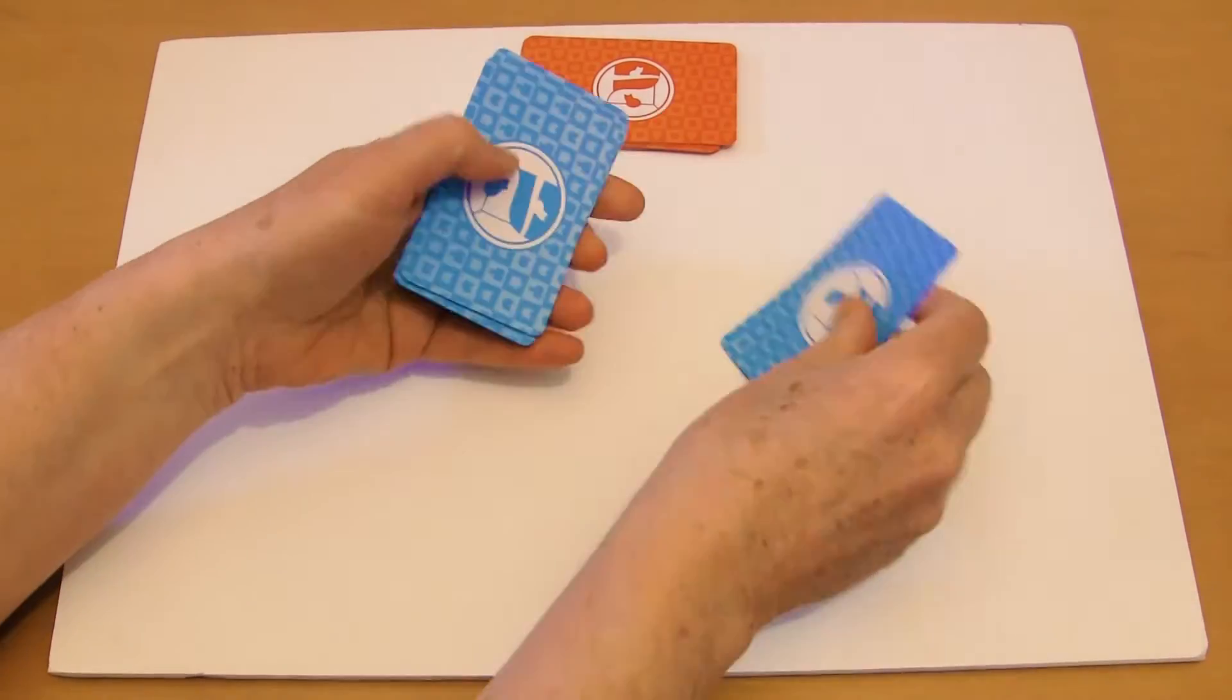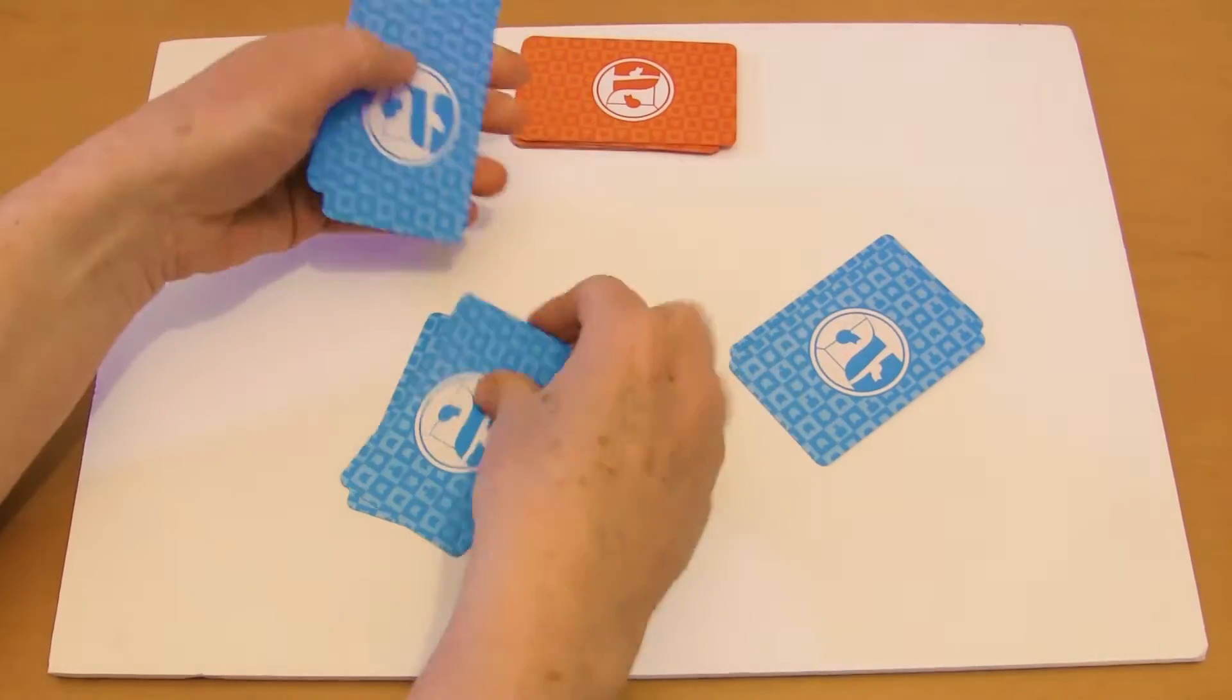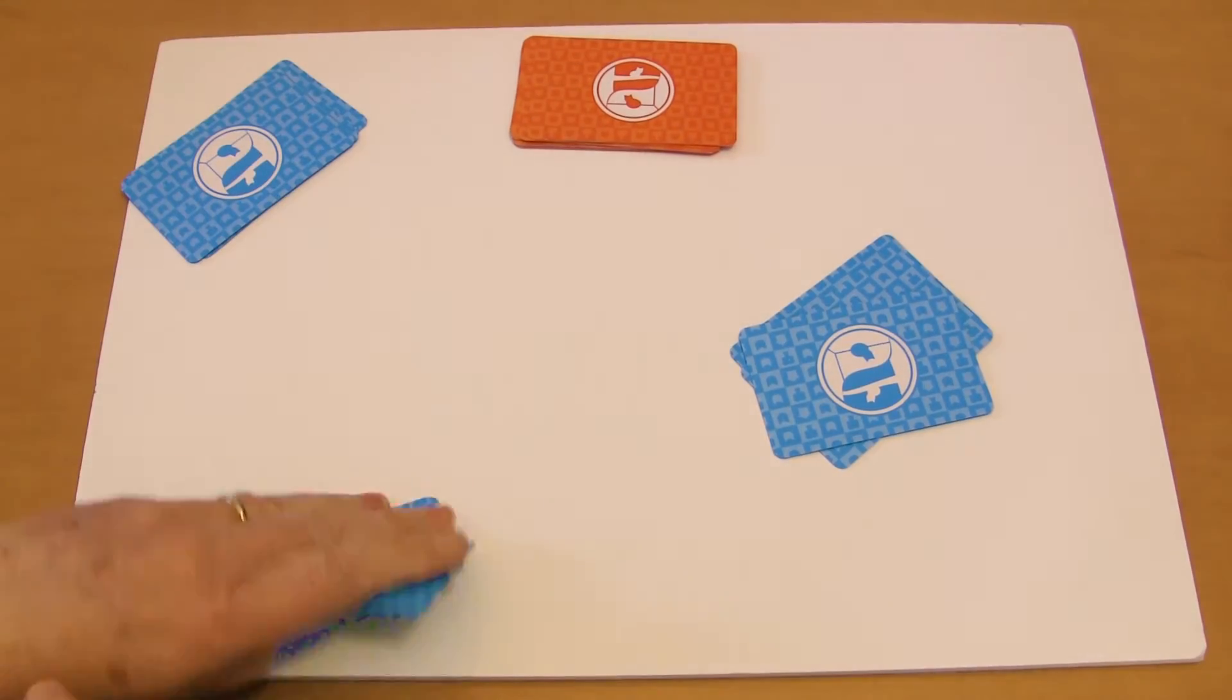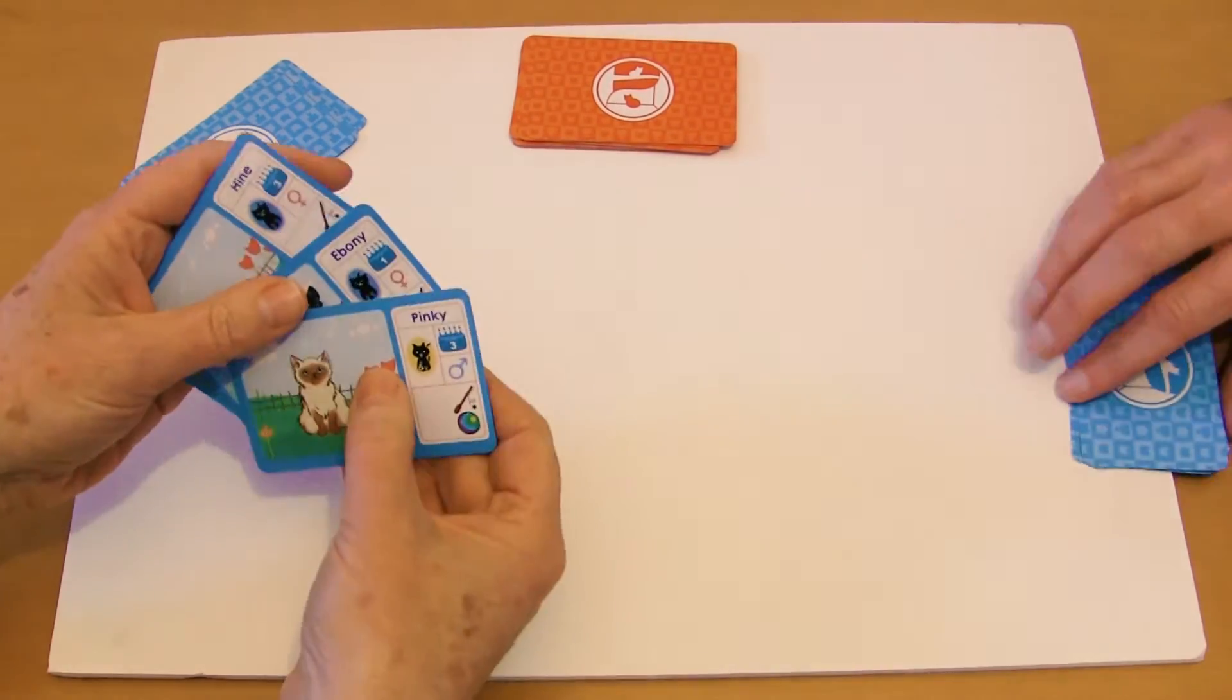This is a game that we call Cat Herding and it's pretty fun really. You can play with quite a number of players and you start off with three cat cards each. You turn them over and see who's got the oldest cat.